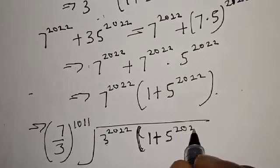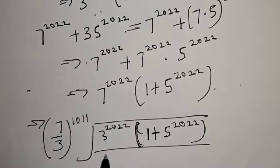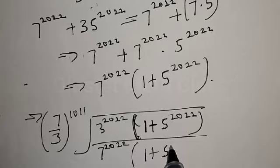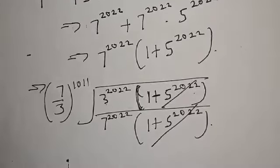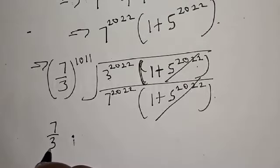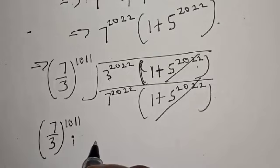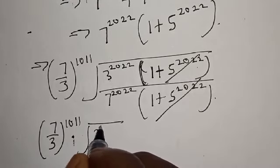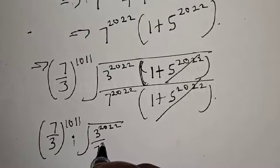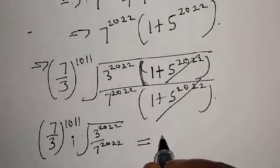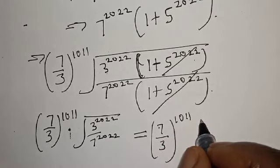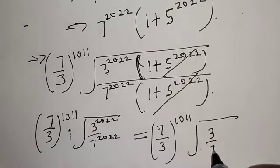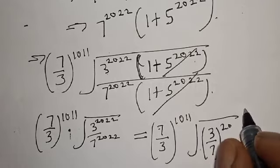Substituting everything, we have 7 over 3 raised to power 1011 multiplied by the square root of 3 raised to power 2022 times 1 plus 5 raised to power 2022, over 7 raised to power 2022 times 1 plus 5 raised to power 2022. The factor 1 plus 5 raised to power 2022 cancels, leaving 7 over 3 raised to power 1011 multiplied by the square root of 3 raised to power 2022 over 7 raised to power 2022.